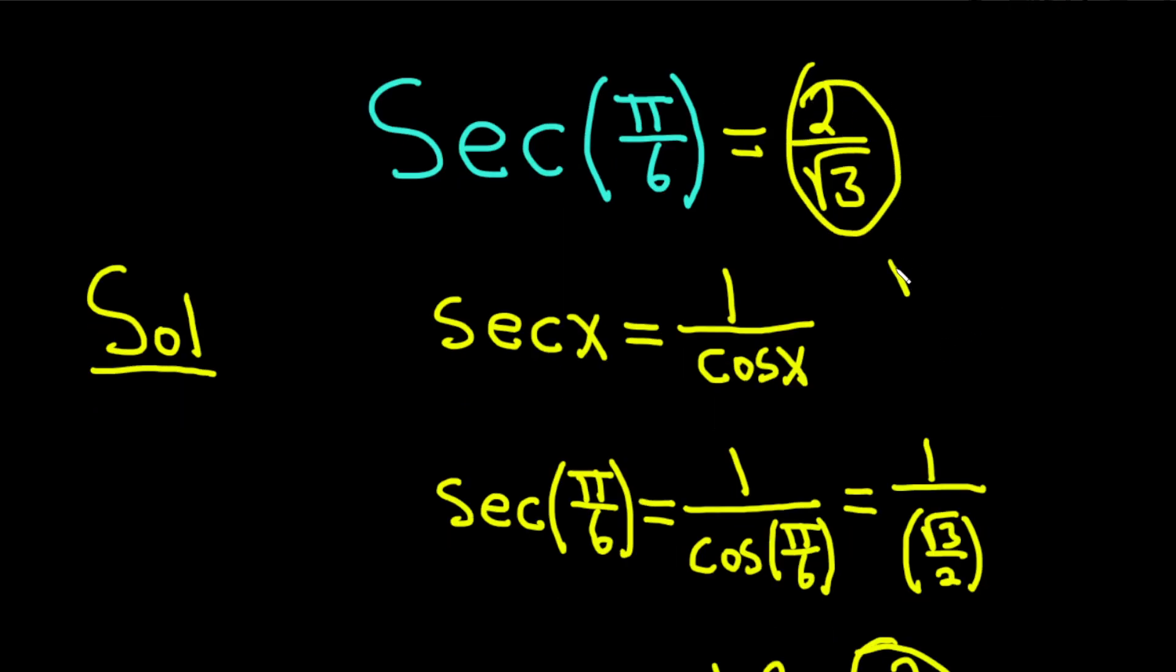If you wanted to rationalize it, you would multiply by the square root of 3 over the square root of 3. Oh, why not? Let's do it really quick. So, let's do this here on the side. So, basically, we're multiplying it by 1. And what this basically does is it gets rid of the root.